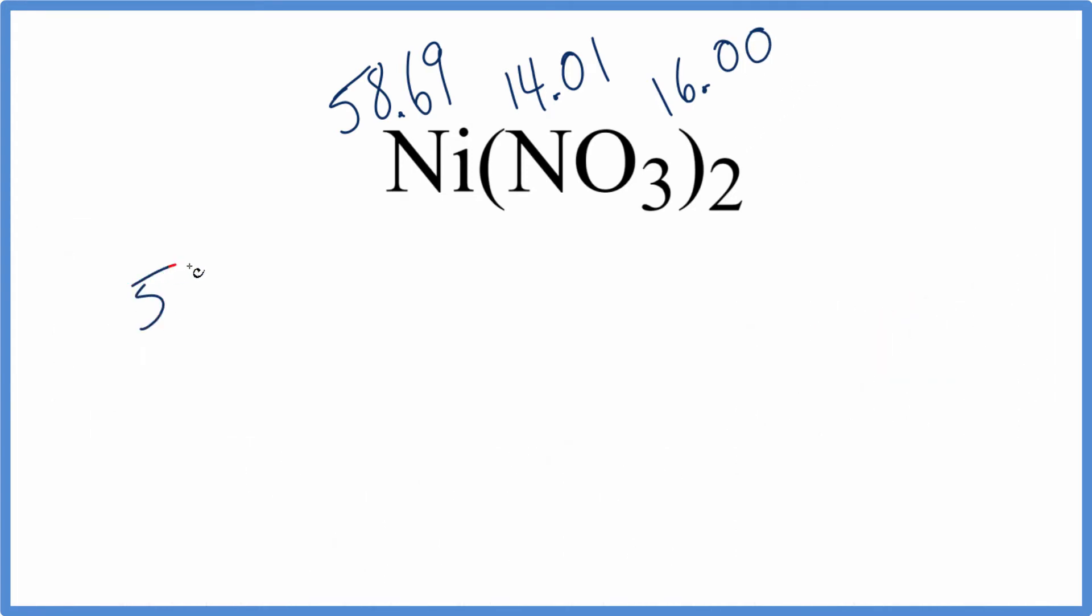So we write our 58.69 for nickel, plus, and we'll just use the parentheses here, 14.01 for the nitrogen, plus 3 oxygen, so 3 times the 16.00 gives us 48.00 grams per mole.